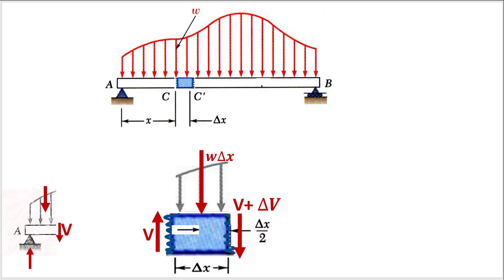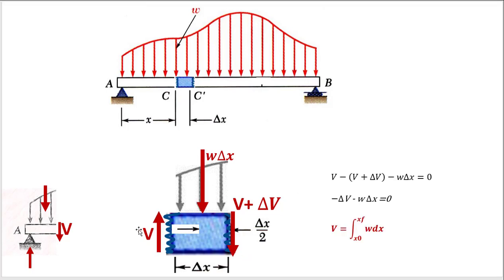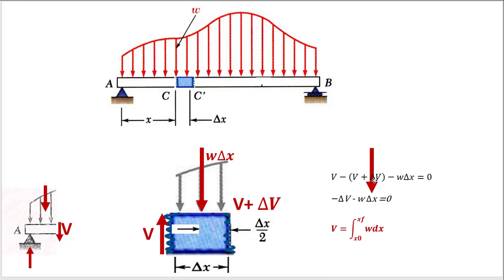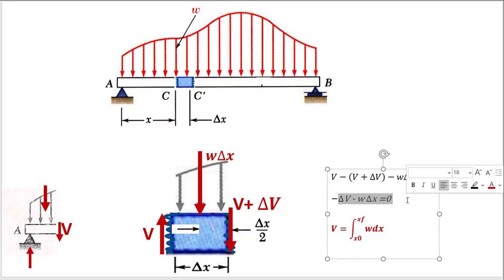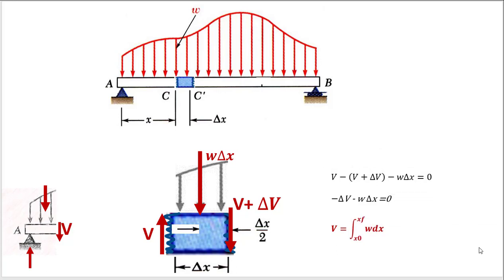If I look at just adding together the Y forces on this little element, I have my starting shear on the left-hand side, I have some piece of that distributed load pushing down in the middle, and then on the other side there's a little bit more shear because it's having to balance this extra load. Walking through the forces in the Y direction, a bit cancels out, and what you end up with is the change in shear is the area underneath that load curve. So this turns into an integral — instead of delta x, we have dx.